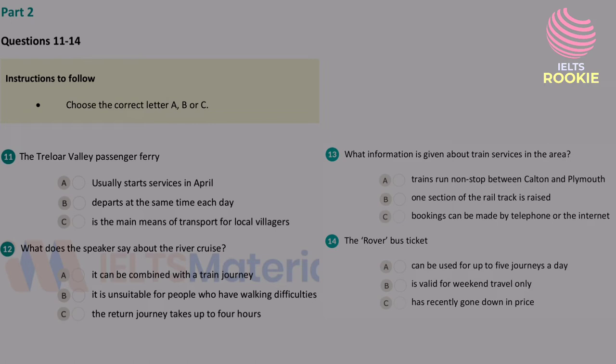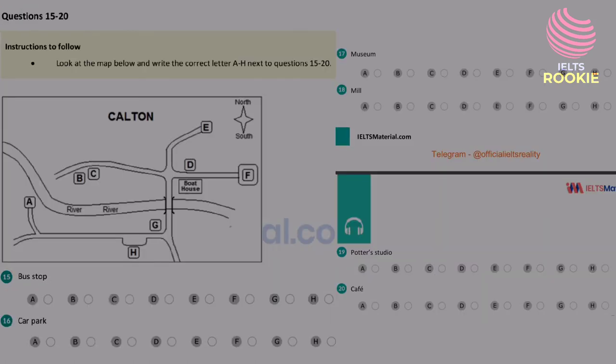The bus service in the Treloar Valley now connects all train stations and villages in the area. Especially for holidaymakers, there's a rover ticket, which can be used at weekends and on national holidays, and allows unlimited journeys on those days. The rover ticket provides great value for money, and is now even cheaper than it was last year. An adult ticket costs £5.50 a day. Senior citizens can travel for £4.50, and a family ticket for up to five people costs just £12. Tickets can be bought on the bus.